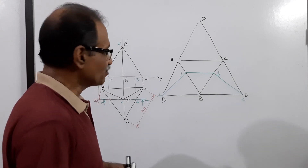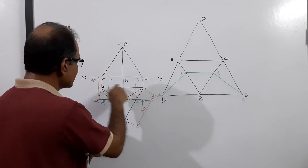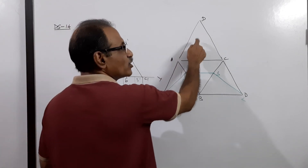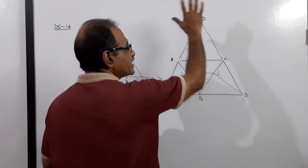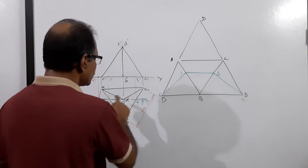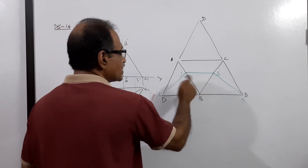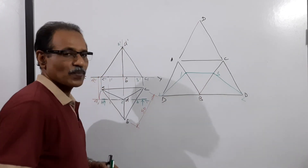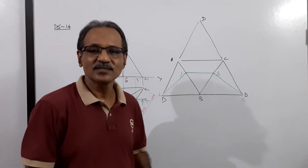The face DCA is not cut by the cutting plane, so there is no point on DCA — no disturbance there. The cutting plane only intersects the base and the two side triangular faces DAB and DBC.